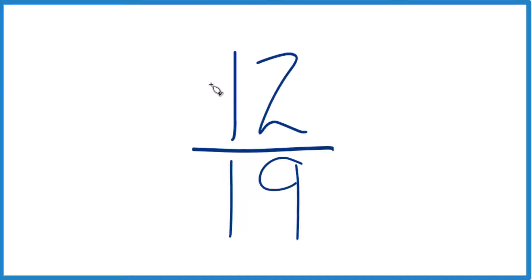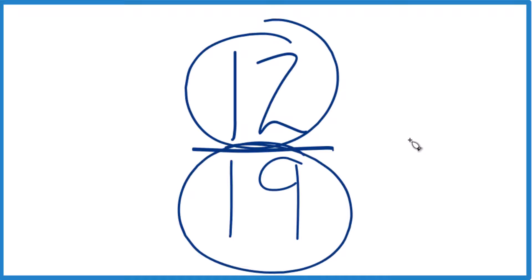So what we can do is we can find the factors of 12 here, and then the factors of 19, and we'll find the greatest common factor. So we'll work from there.